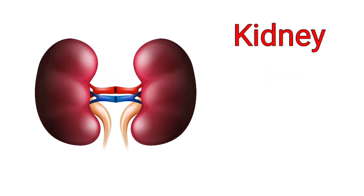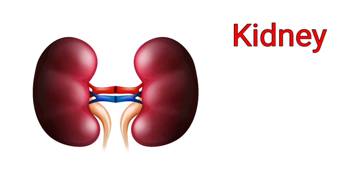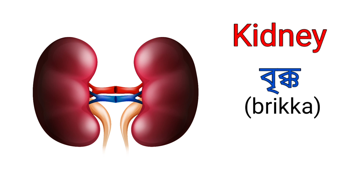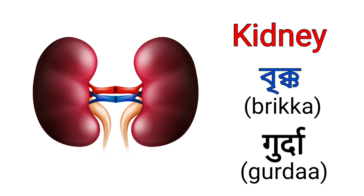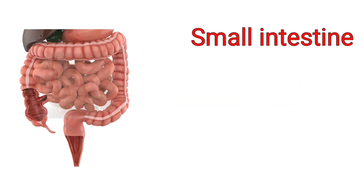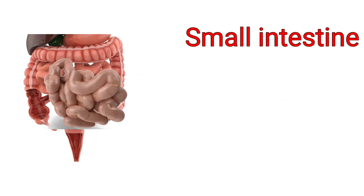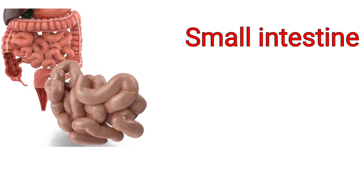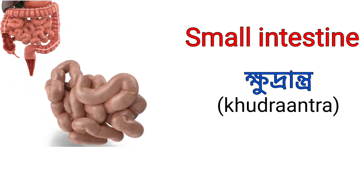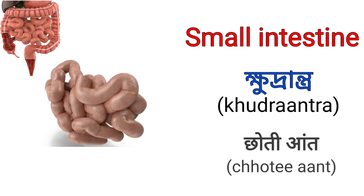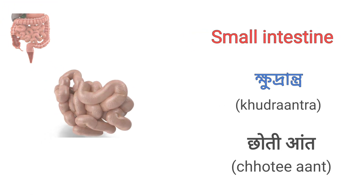Kidney. It's called Brikko in Assamese and it's called Gurdha in Hindi. Small intestine. It's called Kudranto in Assamese and it's called Choti ant in Hindi.